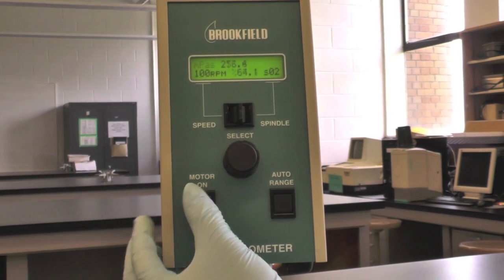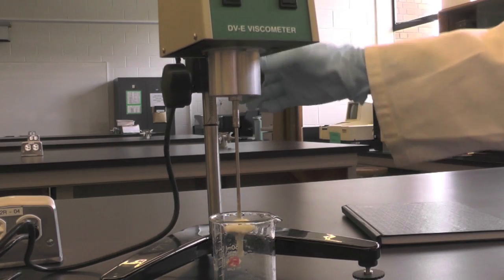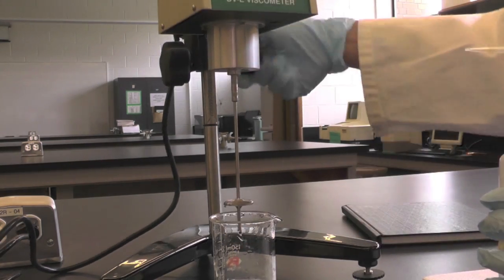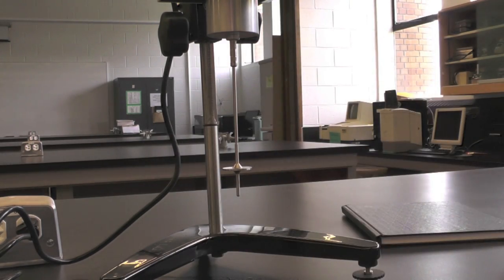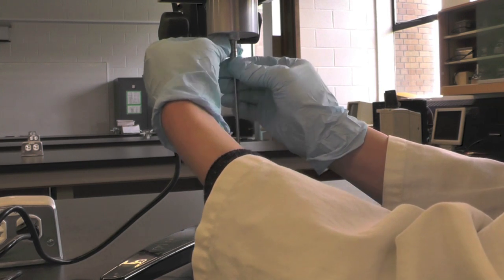After you finish, turn off the motor and raise the spindle. Replace the sample beaker with a waste beaker. Use DD water to wash off the sample residue on the spindle. Wipe the spindle with Kim wipes. Detach the spindle from the viscometer and put it back into the box.